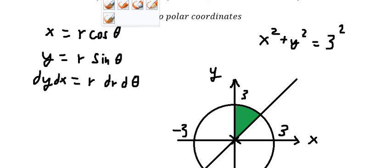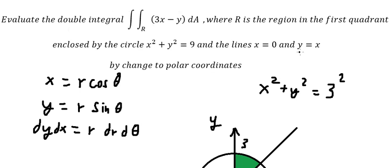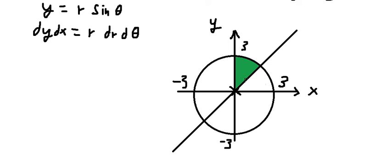We know that y equals x. The angle for that line is pi over 4. So that means we will start from pi over 4 and end at pi over 2.